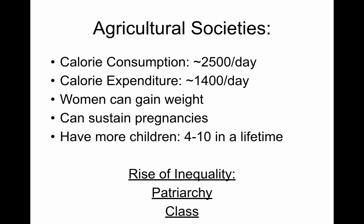Women gain weight, can sustain pregnancies, and most importantly their fertility window opens up. While for most of human history first menses happened around 16 or 17 years old, we see the average age for first menses drop to around 13 years old — which makes sense when you think about when a lot of cultural rituals surround the idea of someone becoming a woman. Women go from having one or two children in their lifetime to four to ten.